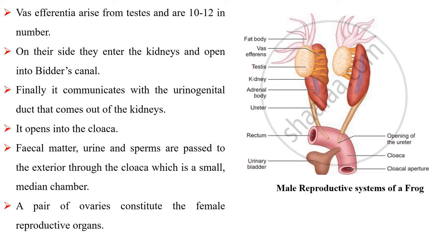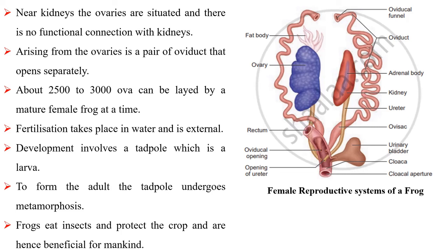A pair of ovaries constitute the female reproductive system. The ovaries are situated near the kidneys and there is no functional connection with the kidneys. Arising from the ovaries is a pair of oviducts that open separately. About 2,500 to 3,000 ova can be laid by a mature female frog at a time. Fertilization takes place in water and is external. Development involves a tadpole, which is a larva. The tadpole undergoes metamorphosis to form the adult.